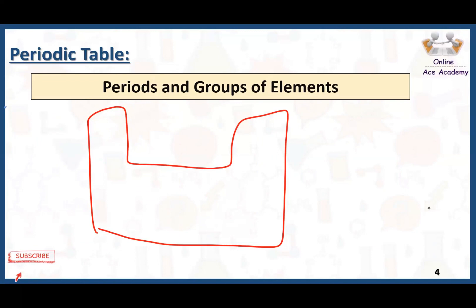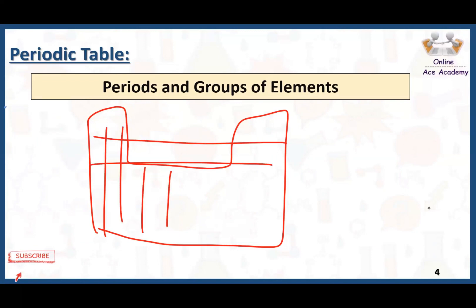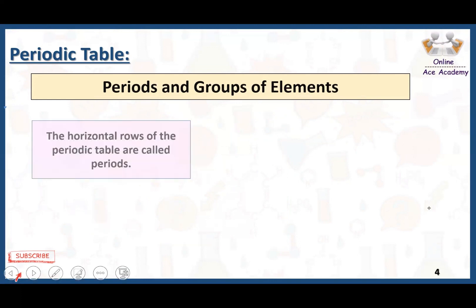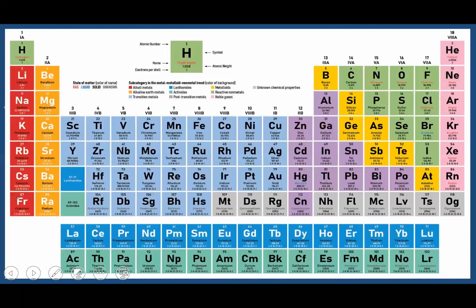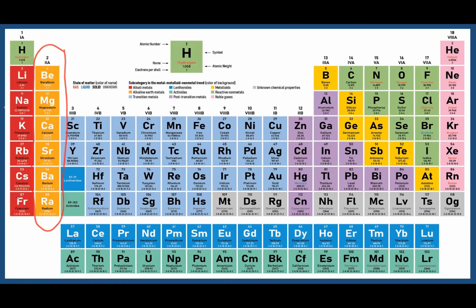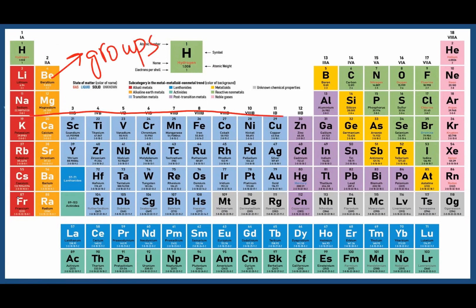In the periodic table, there are some vertical columns and some horizontal rows. The horizontal rows are called periods and the vertical columns are called groups. Looking at the periodic table, the vertical columns are the groups and the horizontal rows are the periods.